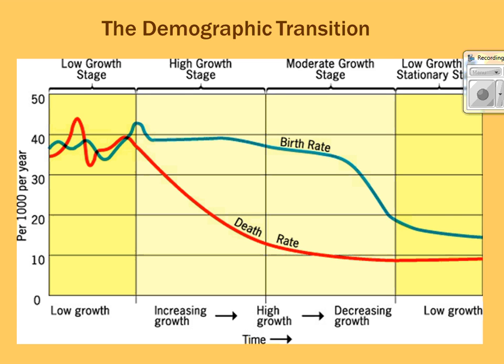The DTM takes birth and death rates into consideration across four stages. Stage one is considered the low growth stage — because there are so many births and so many deaths, population growth is very low or may even decrease. You get a lot of fluctuation, but whether births or deaths are higher in a given year, there won't be much population growth.